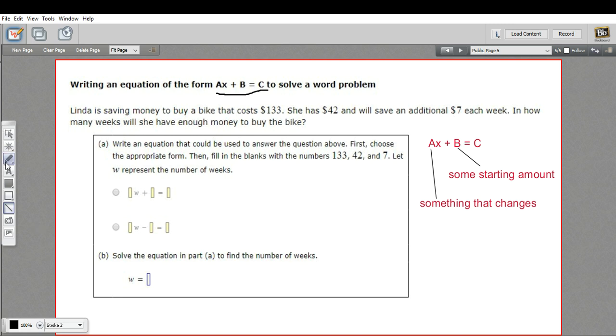To set up this equation, we're going to put the amount that Linda starts with in place of b. So that's our $42. We're going to place the amount that the thing is changing each time period up here. So this is $7 she's adding each week, so 7 times the number of weeks.